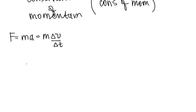So that means that force is equal to m delta V over delta T. Now, I can multiply both sides by delta T, so I would have F delta T is equal to, I lost an m right here, m delta V.